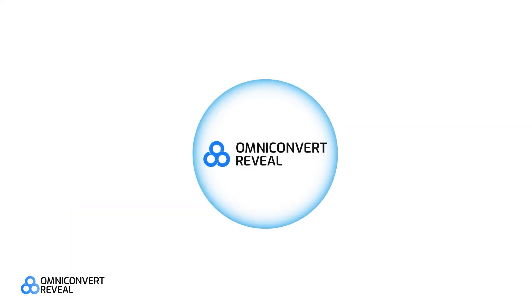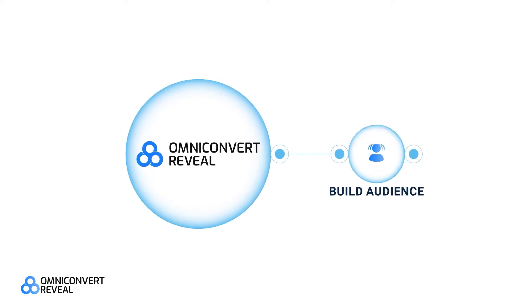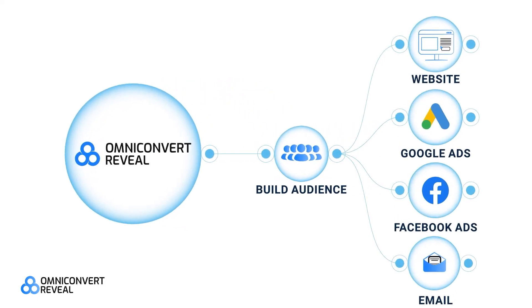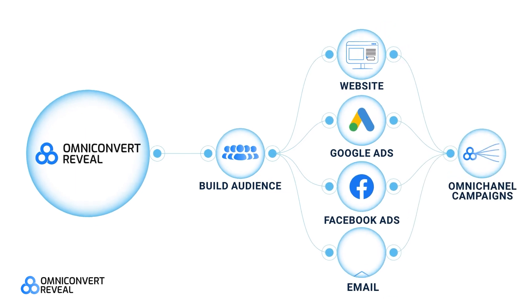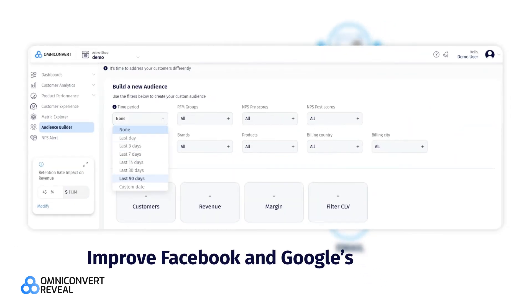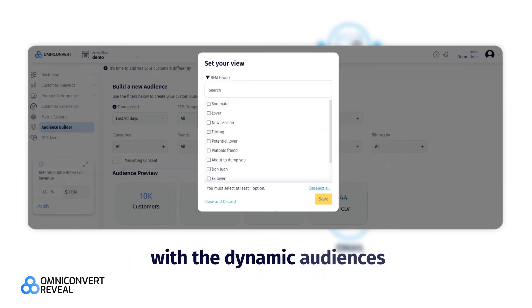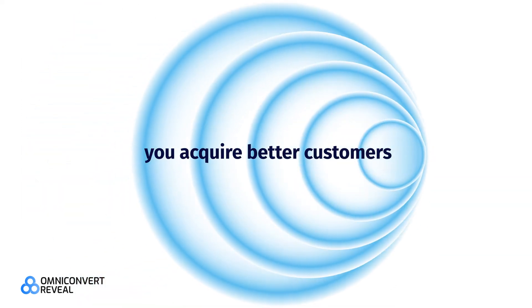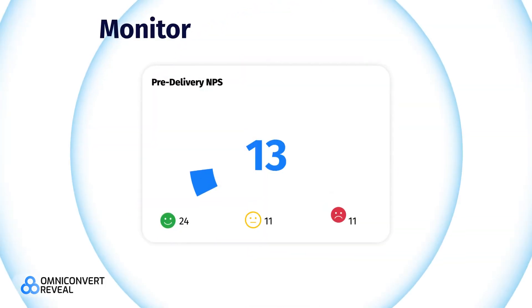Improve acquisition with CRM data. Use your best customers to run lookalike campaigns. It's way too expensive to acquire customers in this cookie-less era. Improve Facebook and Google's algorithms with the dynamic audiences from Omniconvert. This way, you acquire better customers with a higher ROAS.